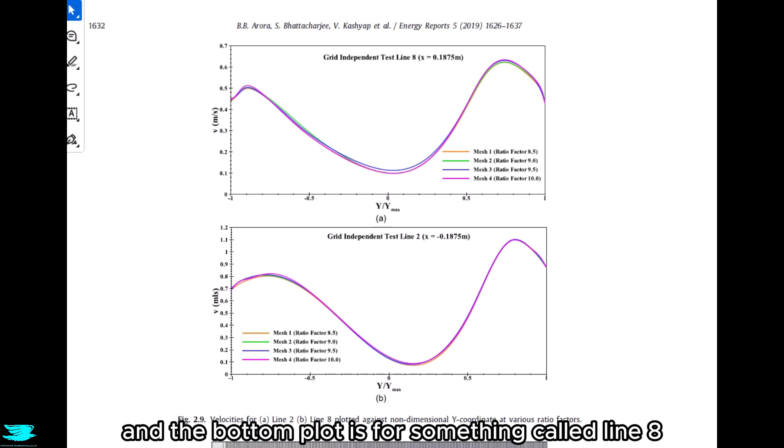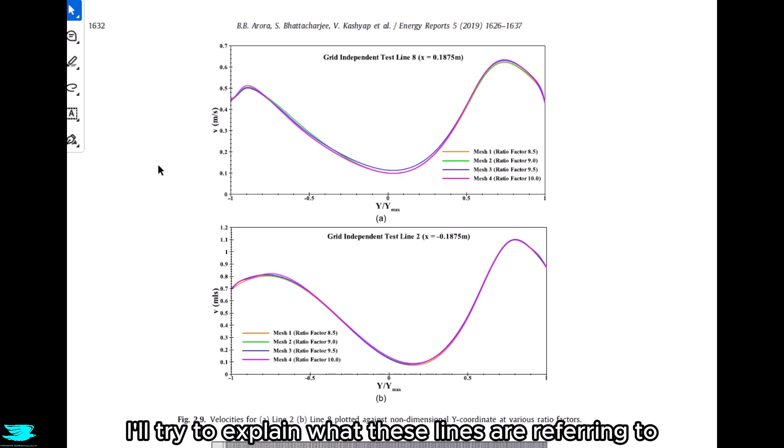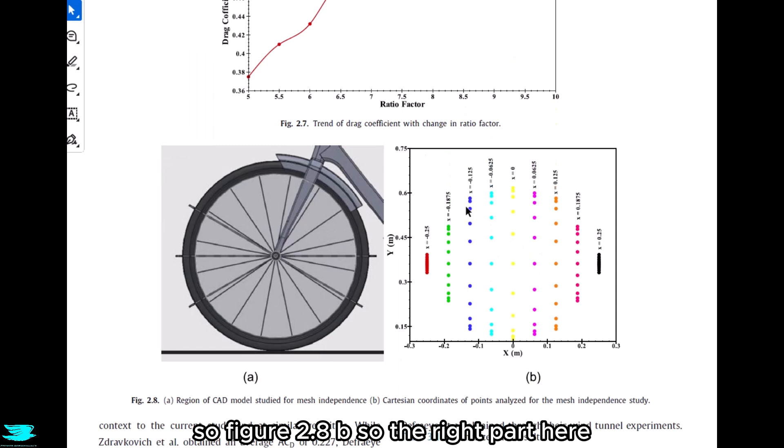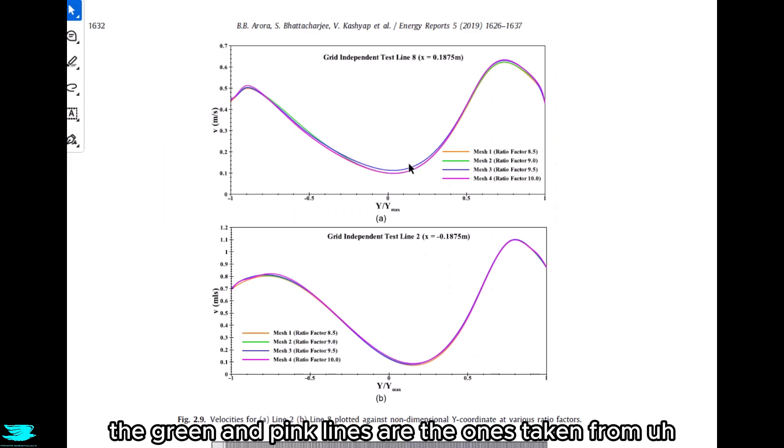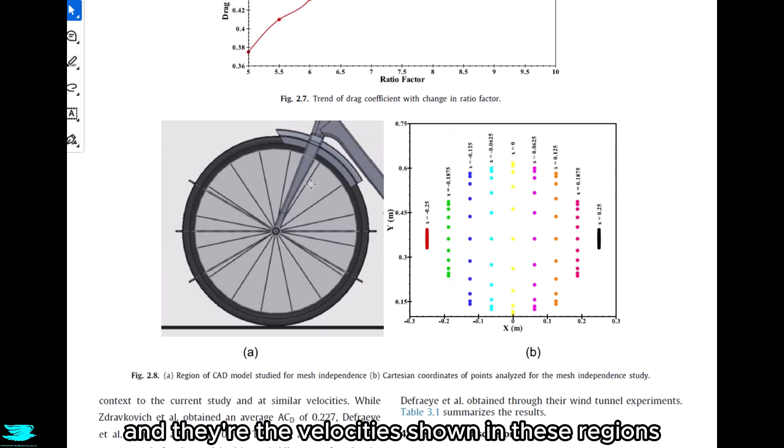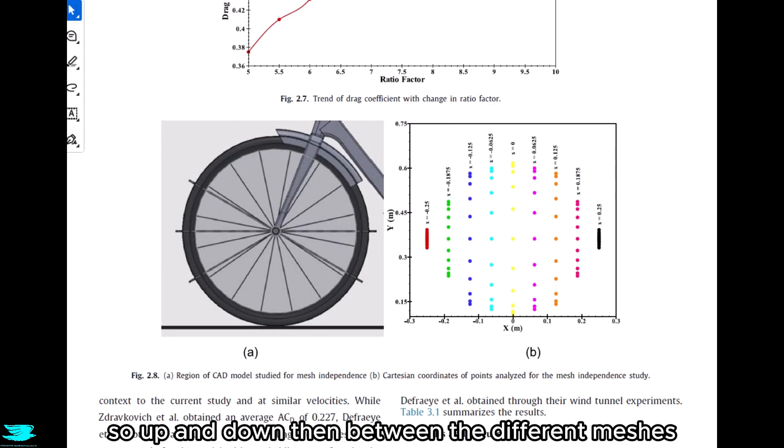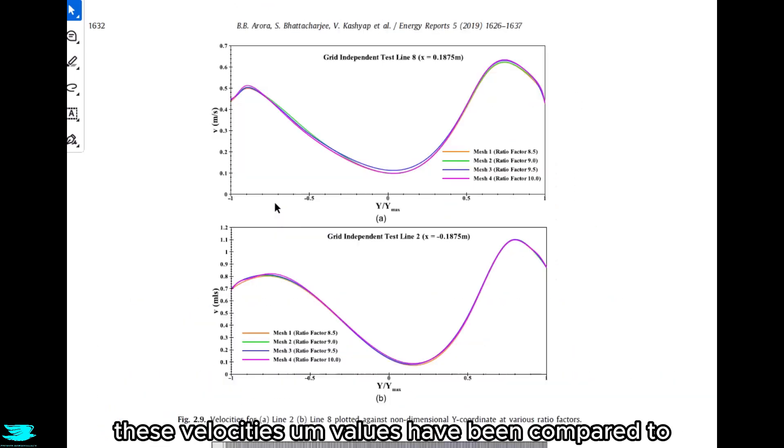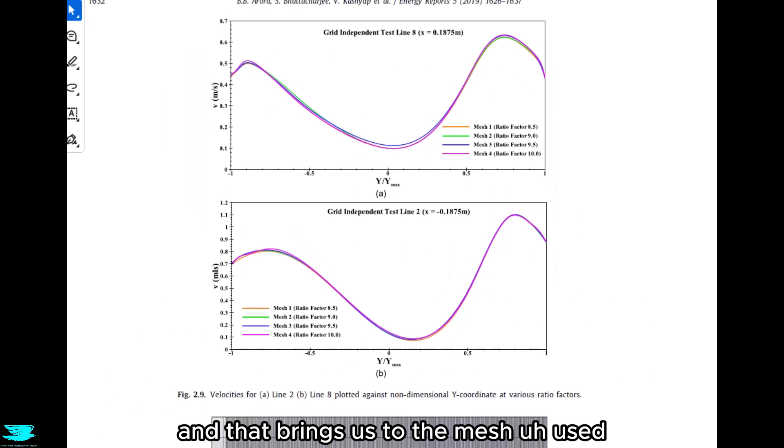The top plot is for something called line 2, and the bottom plot is for something called line 8. Honestly, I found this a little bit confusing, so I'll try to explain what these lines are referring to. In figure 2.8b, so the right part here, we see a bunch of colored dots in these columns. From left to right, these lines are then called line 1 to line 9. Line 1 is the red line, and line 9 is the black line here. For the plots below, the green and pink lines are the ones taken from this graph, and they're the velocities shown in these regions along the wheel, so up and down. Then between the different meshes, these velocity values have been compared.